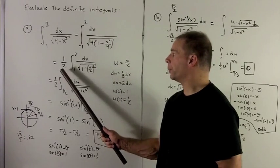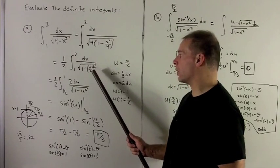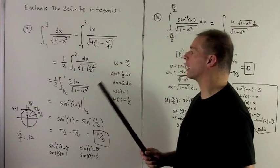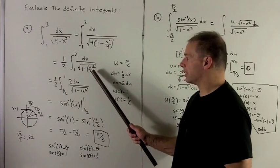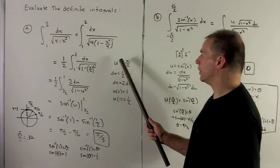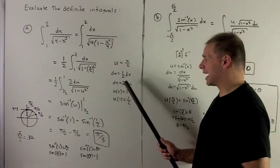I can bring the 4 out as a 2, then I'm left with dx over radical 1 minus quantity x over 2 squared. So now I just want to target this piece, and so that's what I'll substitute out. So u equals x over 2, du equals a half dx, dx equals 2 du.